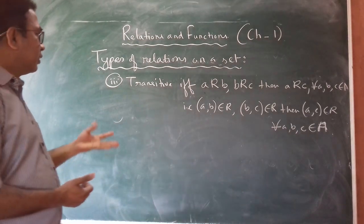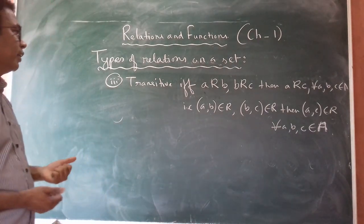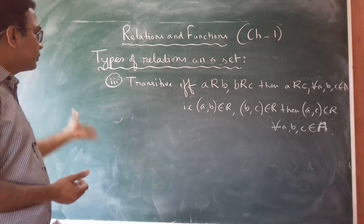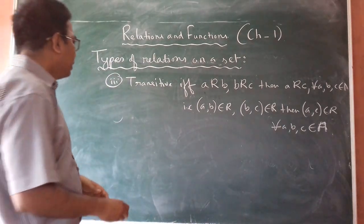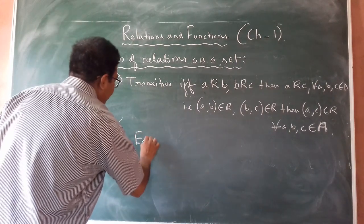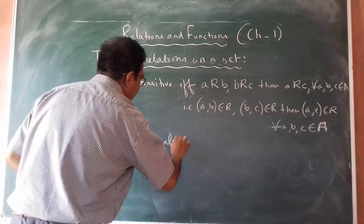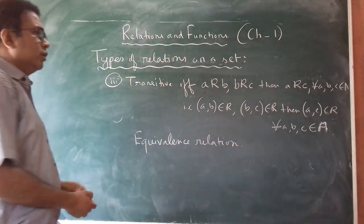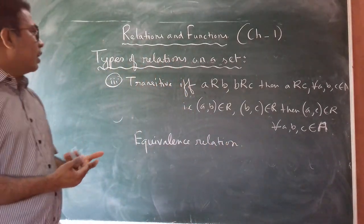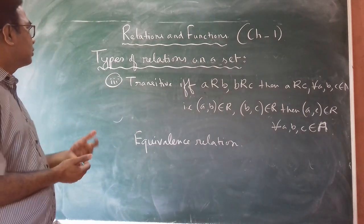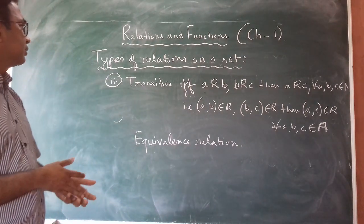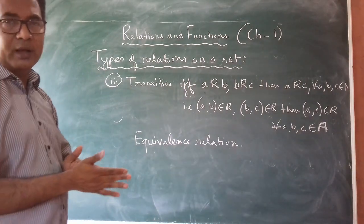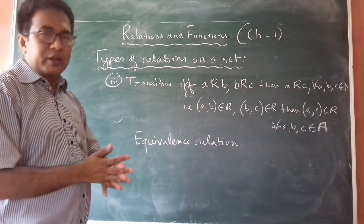So we get here the types of relations as reflexive, symmetric, and transitive. If any relation satisfies all these three conditions, that will be called an equivalence relation. In the next class I will give more examples to illustrate these types of relations. Keep watching, subscribe, like, and comment on my channel. Thank you.